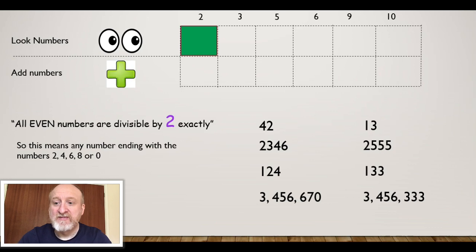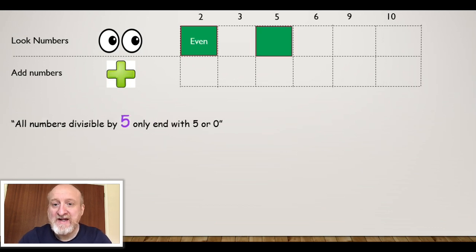Now all these other numbers, 13, 2,555, 133, 3,456,333, they all end in 3s and 5s. That means they're all odd numbers, so they're not divisible by 2.